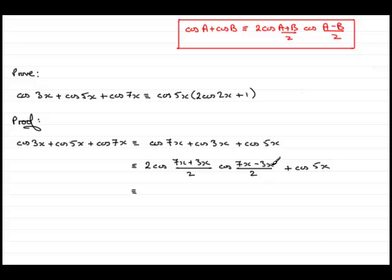Tidying this first term up, we've got 2 cos. Now, 7x plus 3x, as I said earlier, was 10x, divided by 2 is 5x. For this factor here, we've got the cos of the difference between 7x and 3x, which is 4x, divided by 2 is 2x. And then we've got this last term, plus cos 5x.